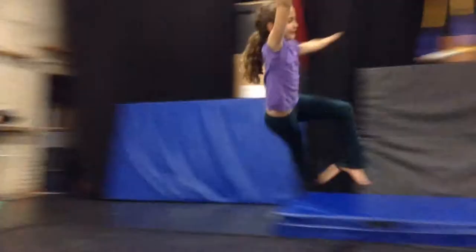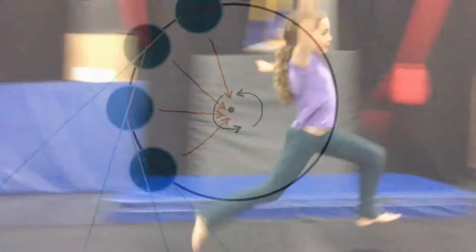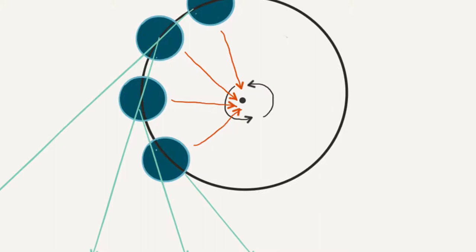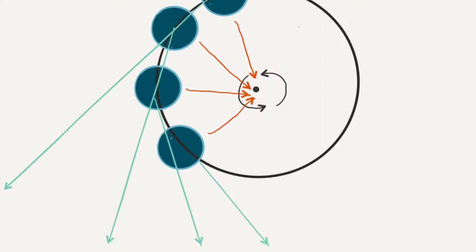Look at how the people in the video are running. They are still running in a straight line and are being pulled by the centripetal force. The dark blue circles in this diagram represent the girl. The blue arrows show the direction she's running, and the red arrows are the centripetal force that keeps her curving.